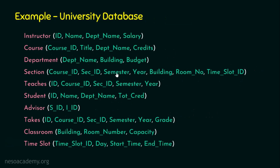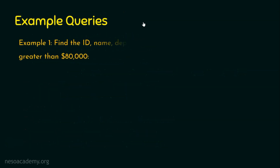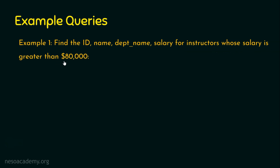This is the university database example we have already seen in the schema diagrams lecture. We need this university database schema to solve the queries. Now let's dive into example query number one. The first example is: find id, name, department name, and salary for instructors whose salary is greater than eighty thousand dollars. I request you to pause this video and find out which table or relation has all these four attributes.